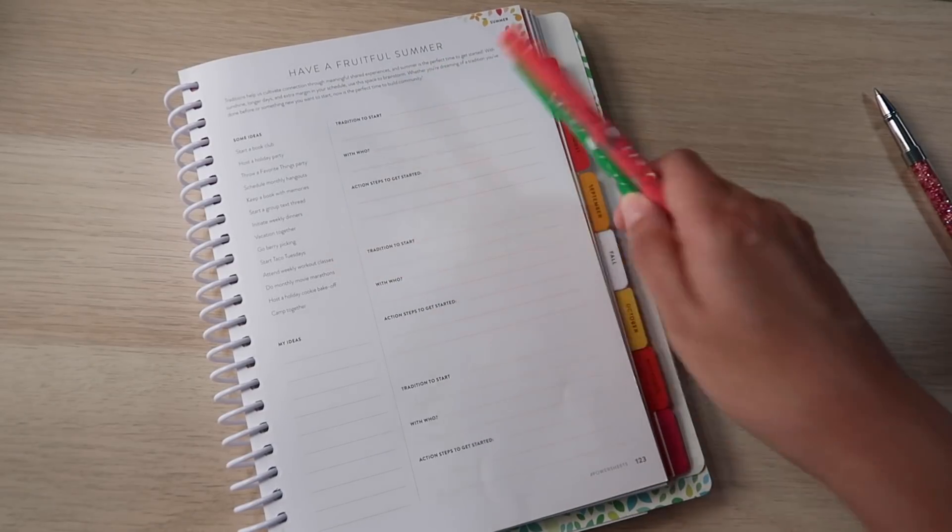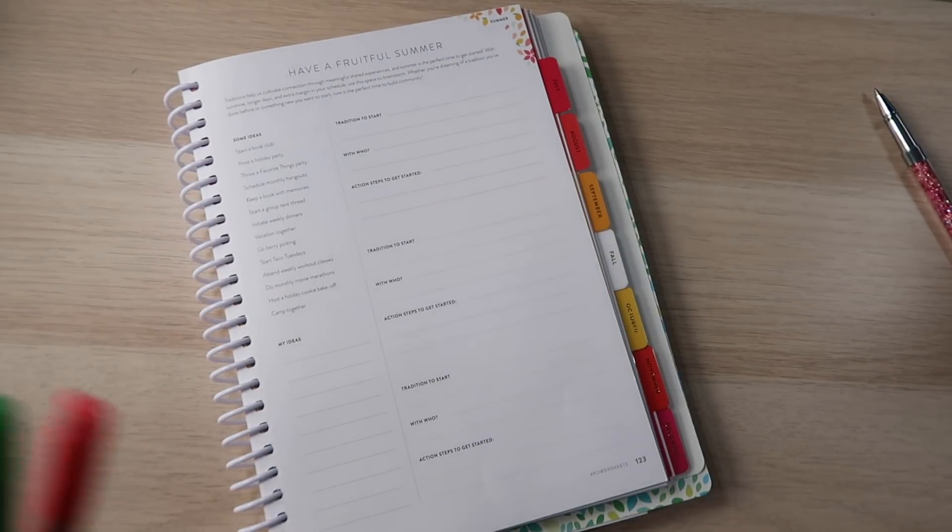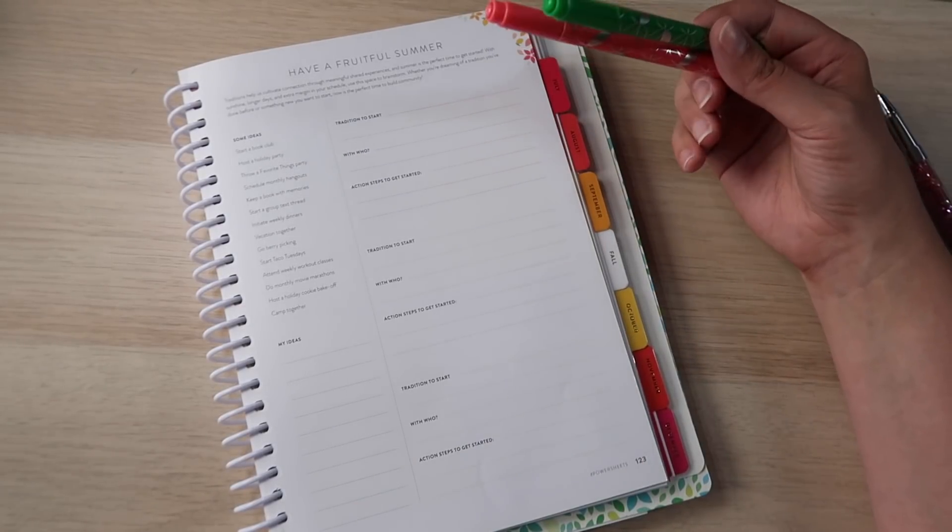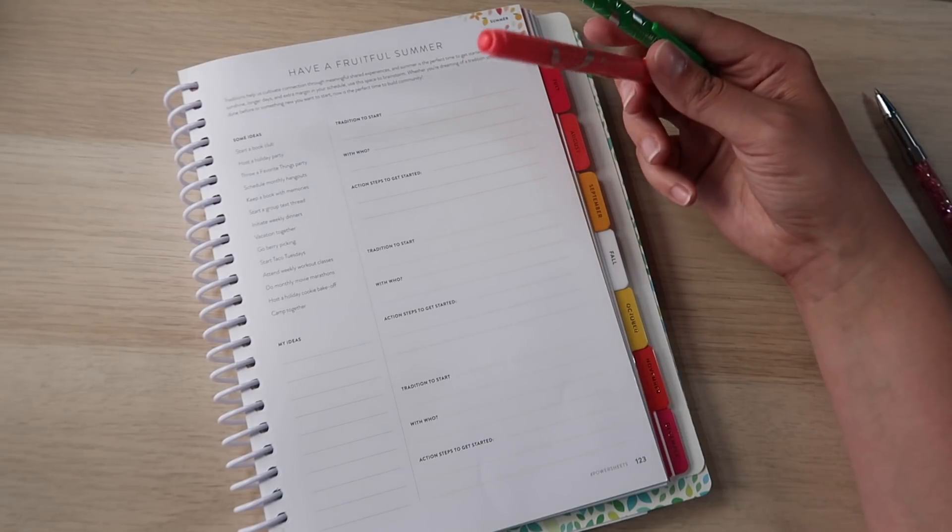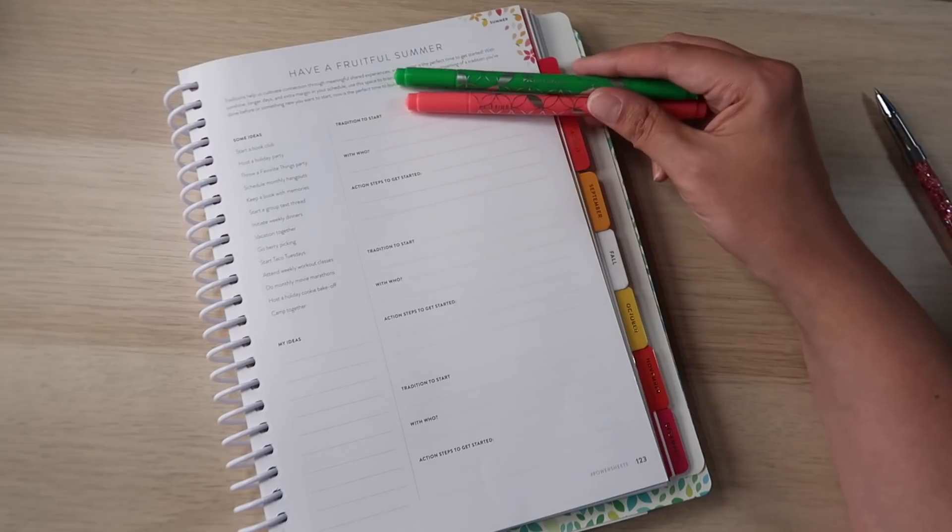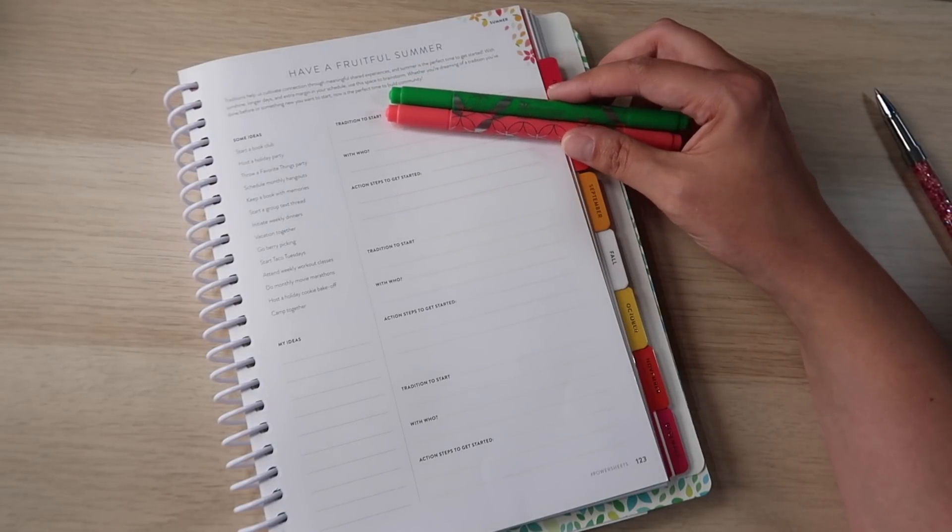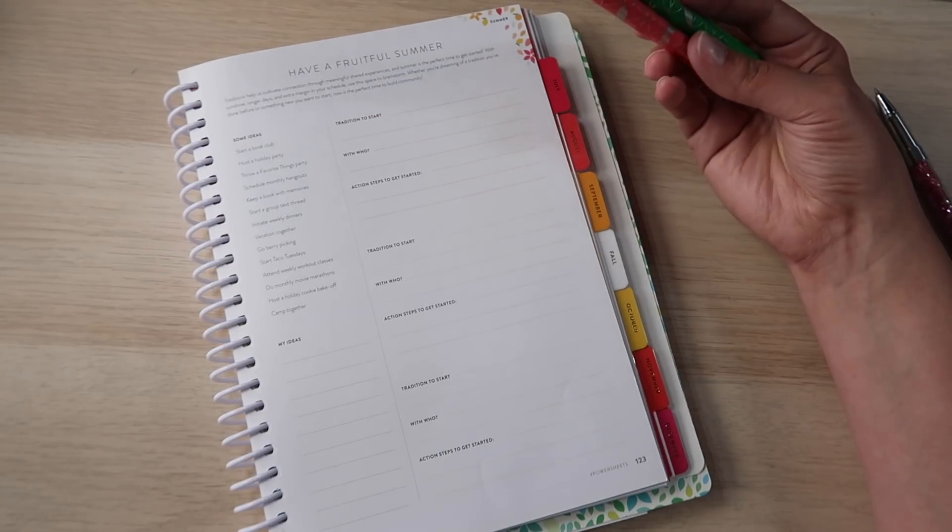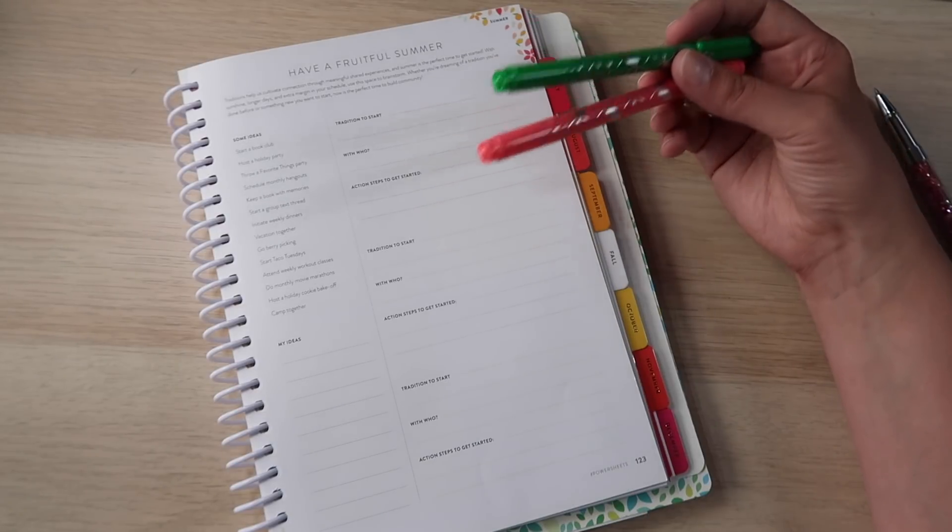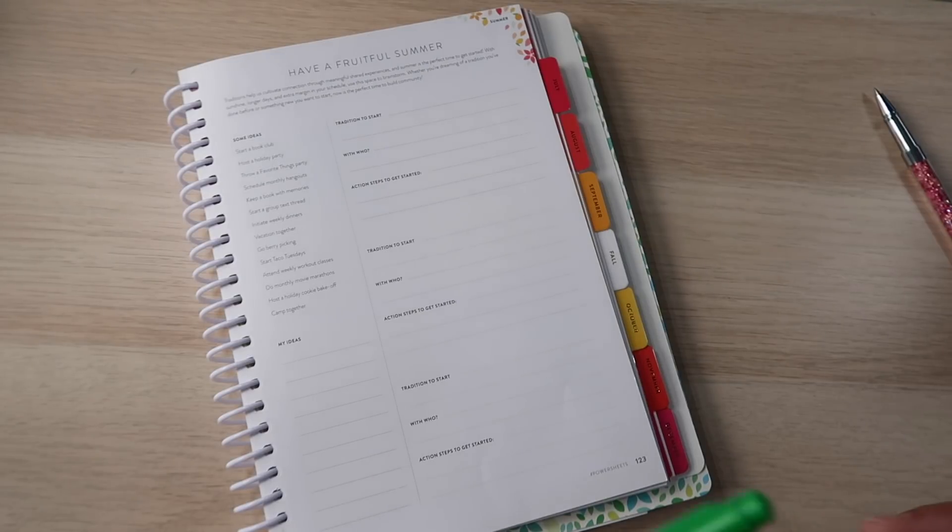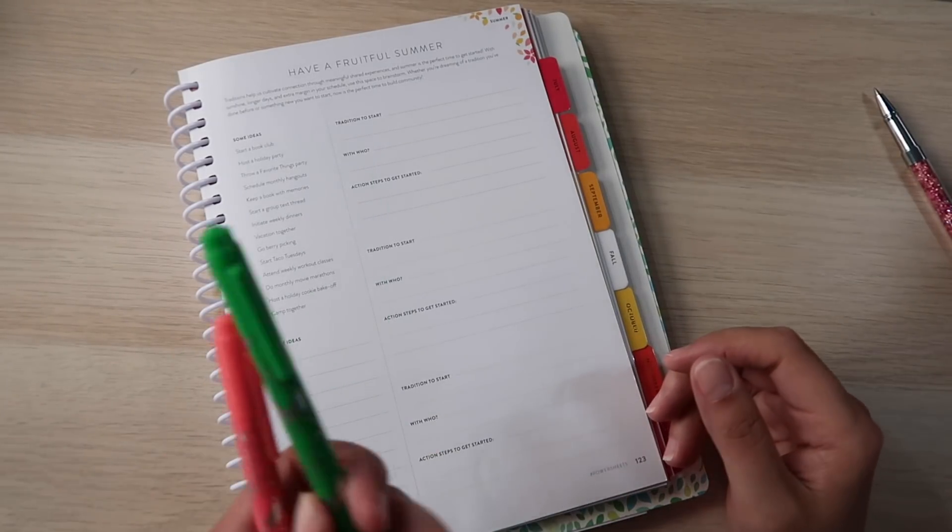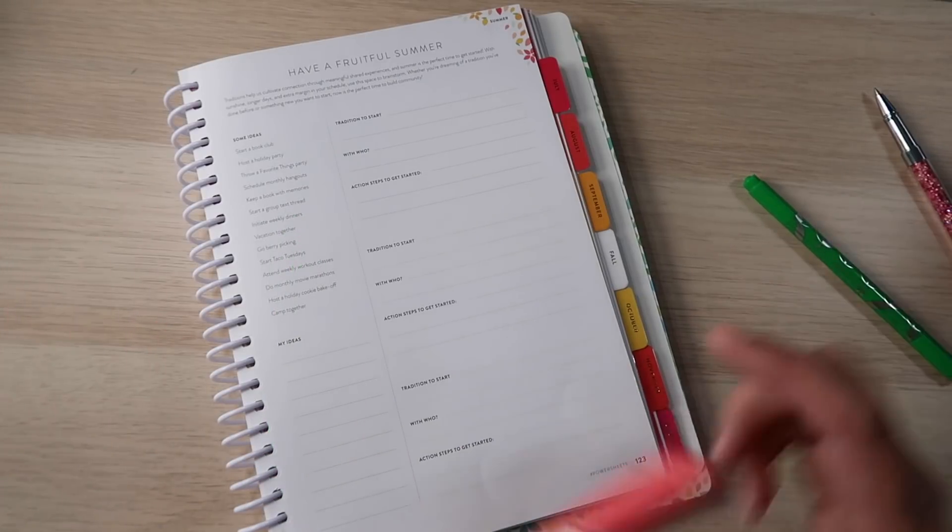So some of the ideas here are start a book club, host a holiday party, throw a favorite things party, schedule monthly hangouts, keep a book with memories, start a group text thread, initiate weekly dinners, vacation together, go berry picking, start taco Tuesdays, attend weekly workout classes, monthly movie marathons, host a cookie bake off, and camp together. Now I'm looking at this and the funny thing is I already schedule my hangouts with my patrons and those actually work really well, not only for being part of Patreon, but also just for making me feel like I get grown up contact with friends every week, which is amazing. I'm not going to brainstorm more ideas because I think I know what I want to do. I'm going to write them down and I'll talk about them.